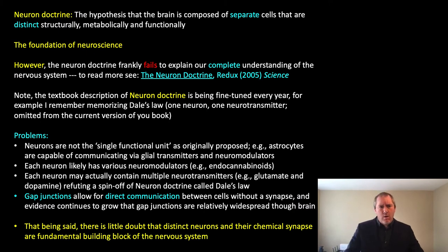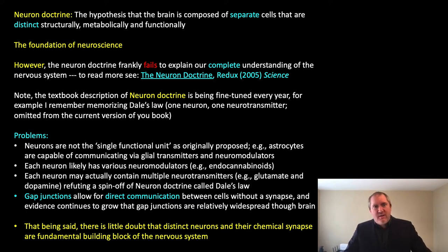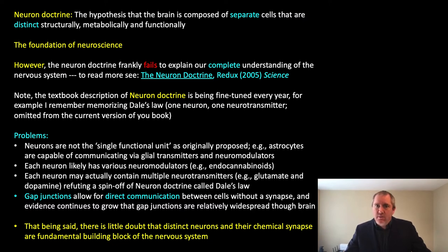Ramon y Cajal's important observations using the Golgi stain — and his challenging of Golgi, which became a very heated argument; these two did not enjoy sharing the Nobel stage together, it was very contentious — led to the neuron doctrine, which was the foundational hypothesis that created cellular neuroscience. This is the hypothesis that the brain is composed of separate cells that are distinct not only structurally, but also metabolically and functionally. It can be argued that this is the foundation of all of neuroscience.